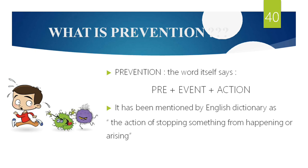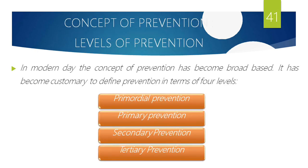There are four levels of prevention: primordial, primary, secondary, and tertiary. It depends on the complexity and severity of the disease. In true sense, primordial and primary are true prevention, because after primary prevention the disease has already come into action — we are just limiting or halting its progress. In primordial and primary, the disease has not yet occurred.